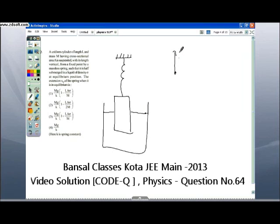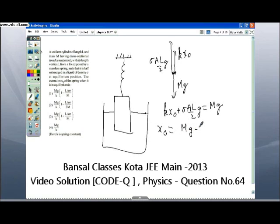If we see the free body diagram, there is a K X naught acting in the vertically upward direction and there is a buoyant force value will be sigma A L by 2 G and the weight of the cylinder M G acts in the downward direction. Means K X naught plus sigma A L by 2 G in equilibrium will be equal to M G. We are required to find out X naught pretty simple. That is M G minus sigma A L by 2 G upon K.